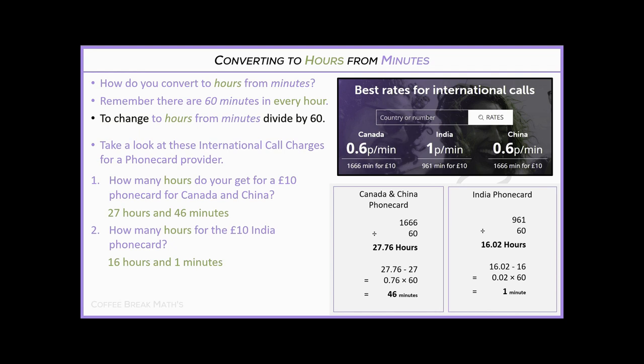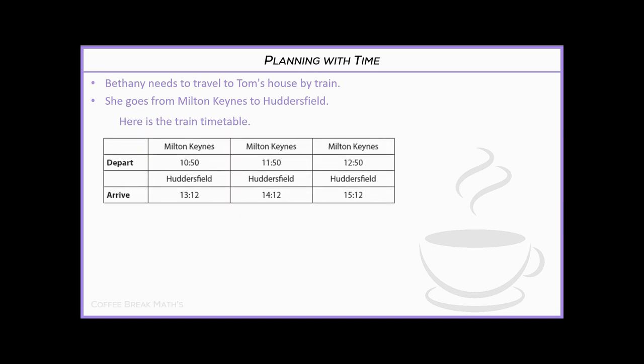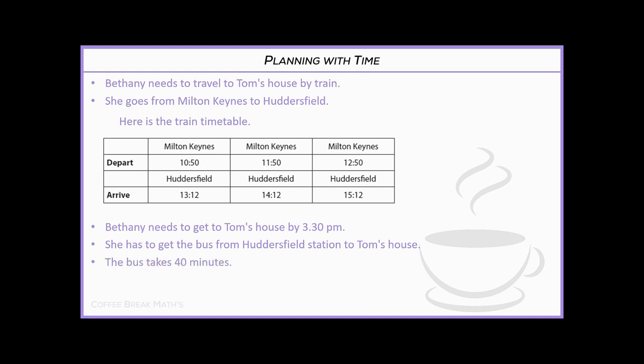Now let's look at time planning. We're going to work out a trip that Bethany needs to take. She's going to Tom's house, travelling by train from Milton Keynes to Huddersfield. Here is the train timetable with three trains departing from Milton Keynes. Bethany needs to arrive at Tom's house by 3:30, and the bus from Huddersfield station to Tom's house takes 40 minutes.